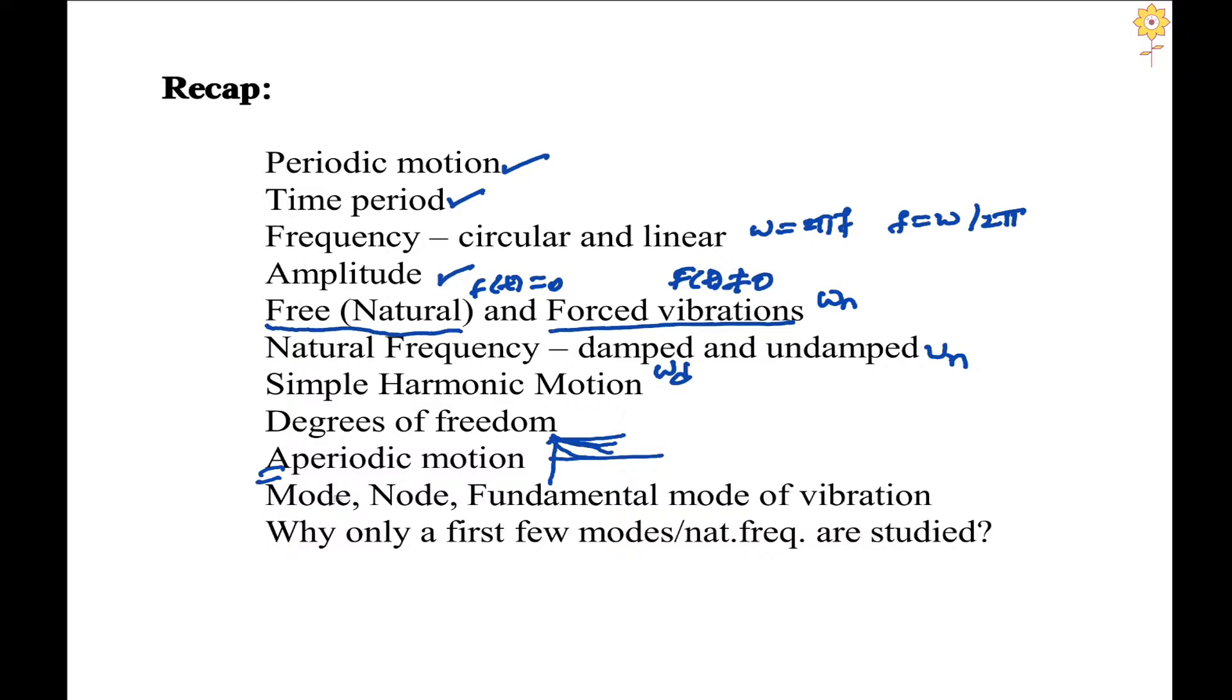Mode: whenever there is a resonance, then the configuration attained by the body is called a mode. Node is that position in the system where there is no deformation.